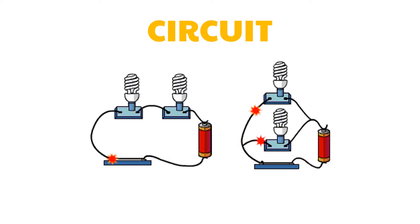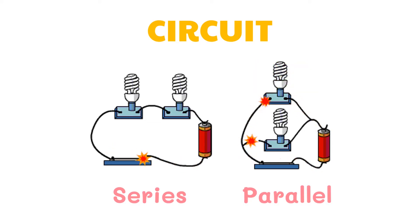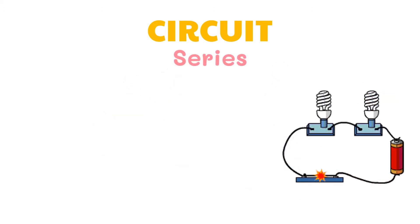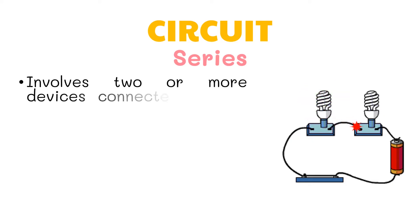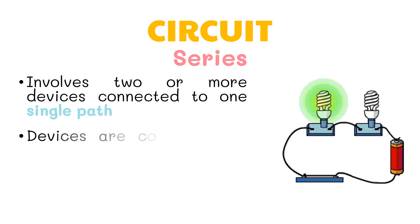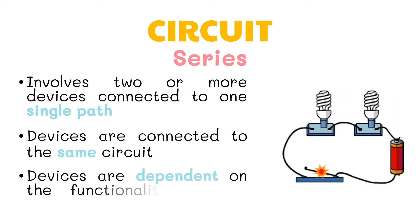There are two main types of circuits: series and parallel circuits. Each one has its own distinct features, advantages, and disadvantages. In a series circuit, two or more devices are connected to one single path. Devices are connected to the same circuit and are dependent on the functionality of one another.